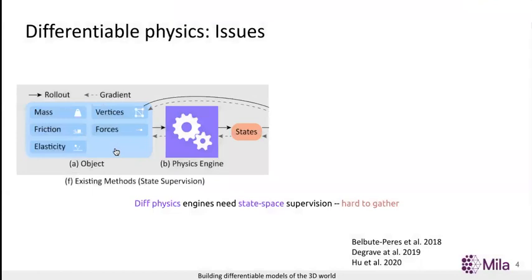One very successful approach for system identification is to leverage differentiable physics. Differentiable physics engines take as input object geometry and randomly guessed physical properties. At each time step, they output the state of each object in the scene.